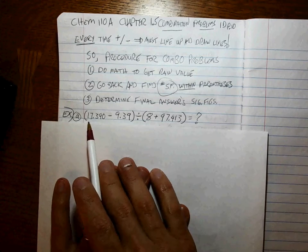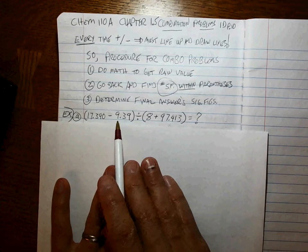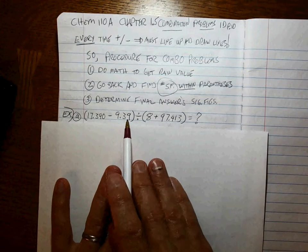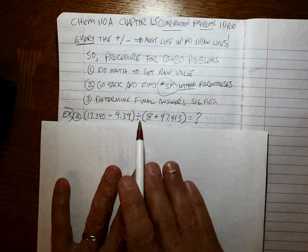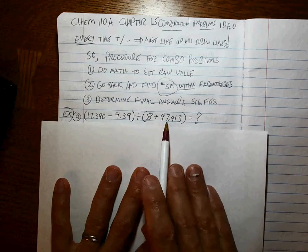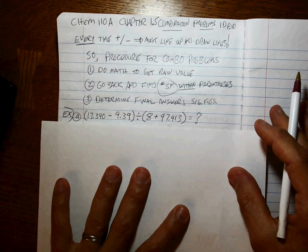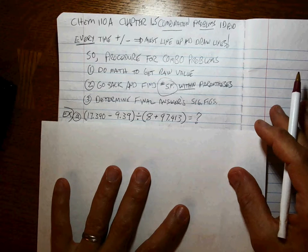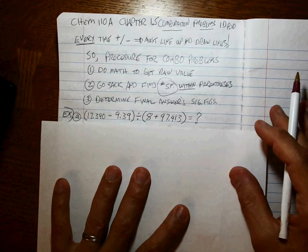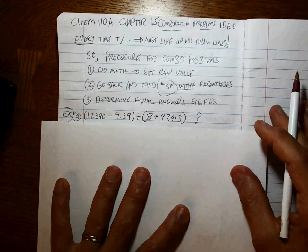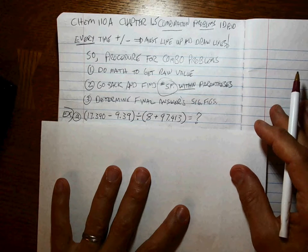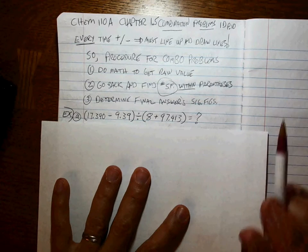First problem. 17.390 minus 9.39 parentheses divided by 8 plus 97.413. How many people have already decided that there's one sig fig in your answer? Because if you have, you're in trouble.